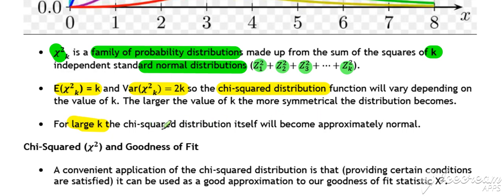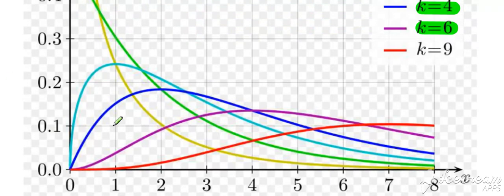Not hugely relevant for what we do, but the larger the value of k, the more closely the chi-squared distribution itself starts to look more normal in its shape. As you can see from the red graph there for k equals 9, it's looking more normal in shape than the others.